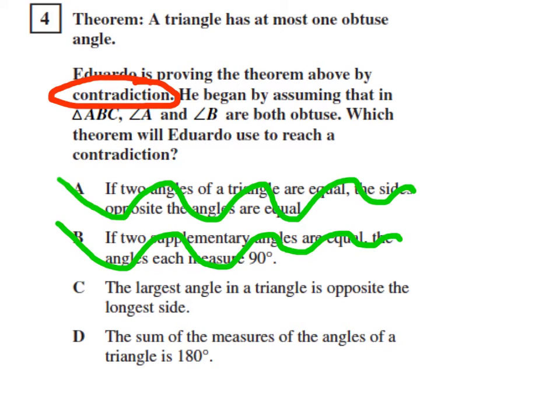We need something that will lead us to a contradiction if we're assuming that a triangle has more than one obtuse angle, or a triangle can have more than one obtuse angle.